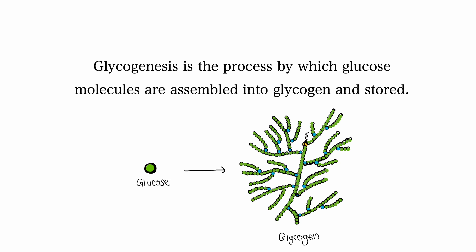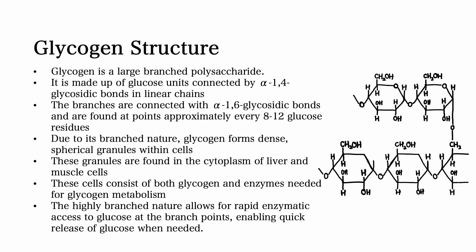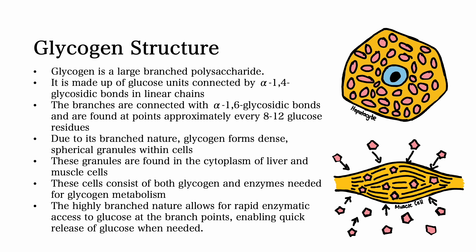Glycogenesis is the process by which glucose molecules are assembled into glycogen and stored. Let's briefly go over glycogen and then explore the process of glycogenesis. Glycogen is a large branched polysaccharide made up of glucose units connected by alpha-1,4 glycosidic bonds in linear chains. However, this molecule is branched, and the branches are connected with alpha-1,6 glycosidic bonds, found at points approximately every 8 to 12 glucose residues. Due to its branched nature, glycogen forms dense spherical granules within cells.